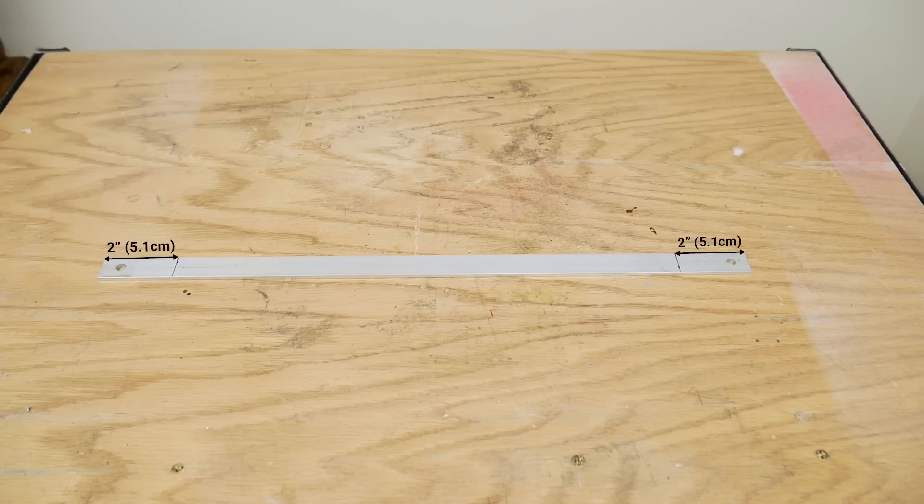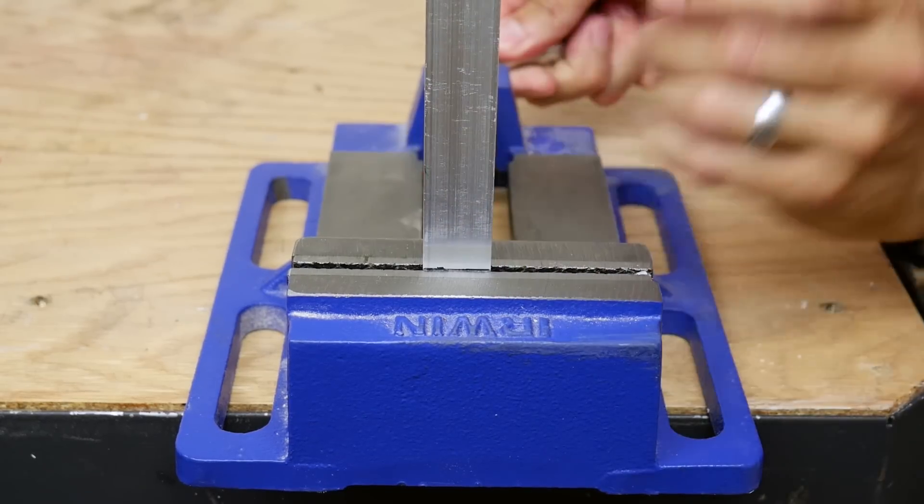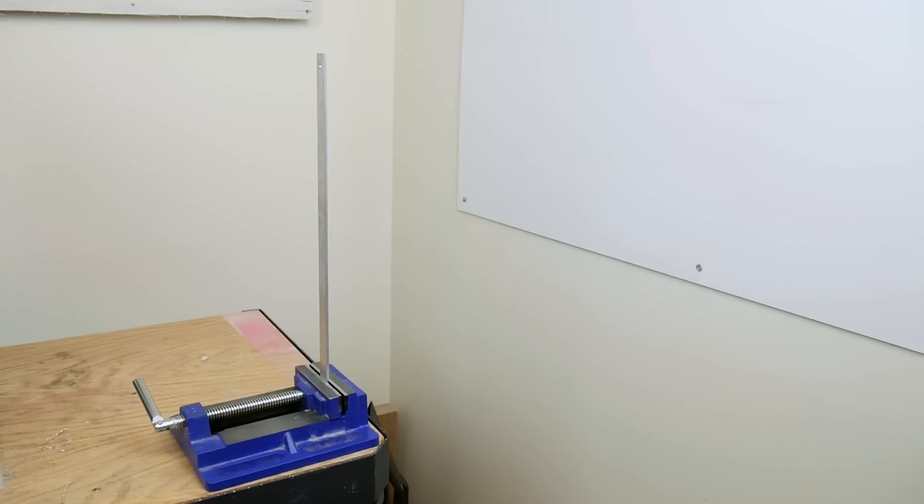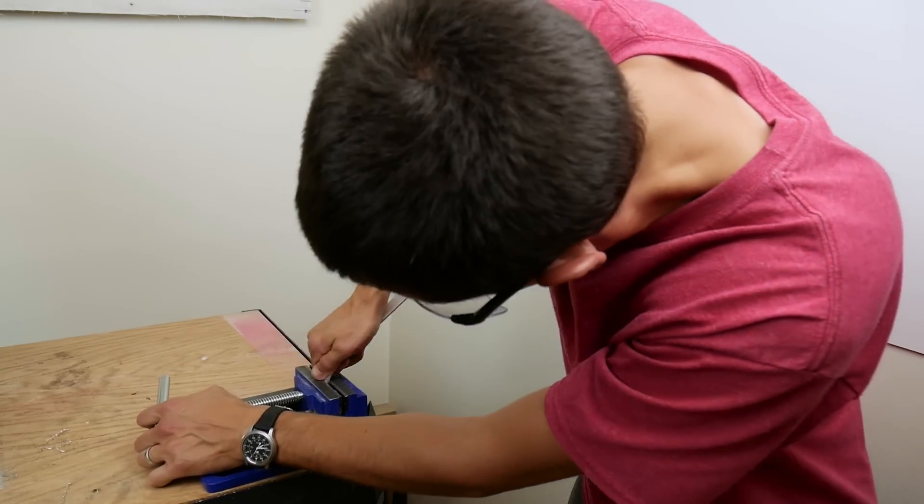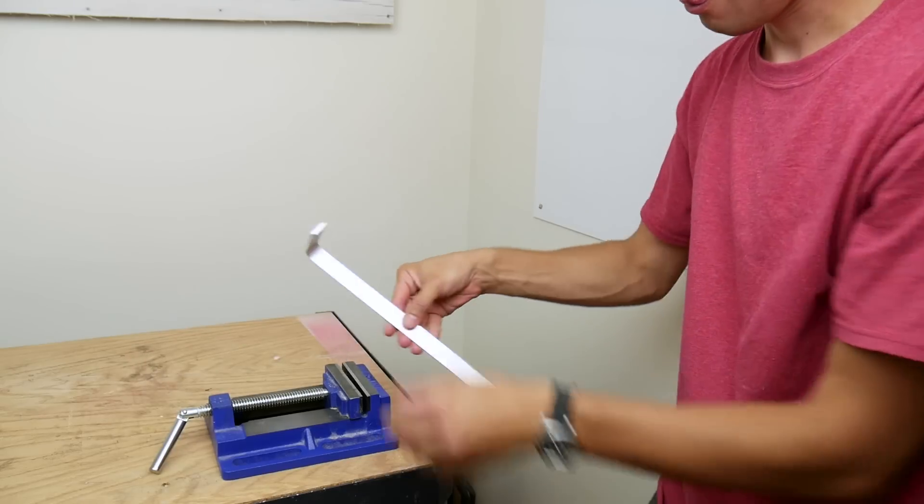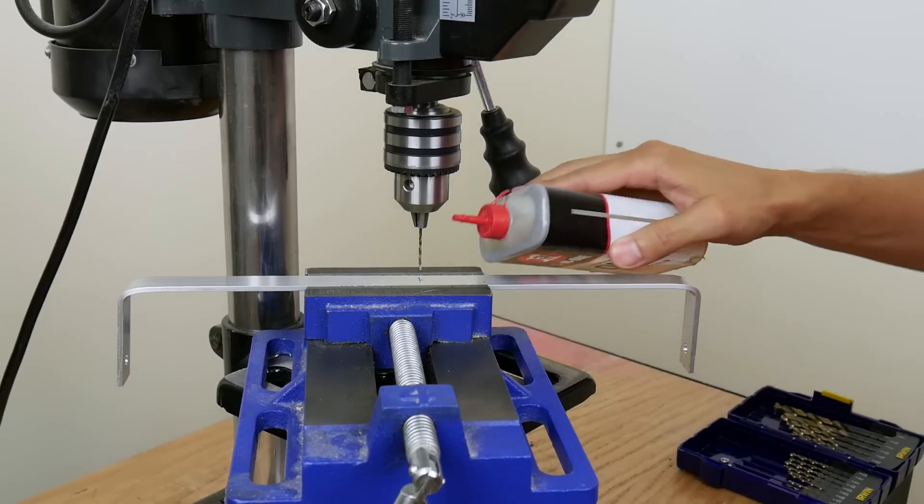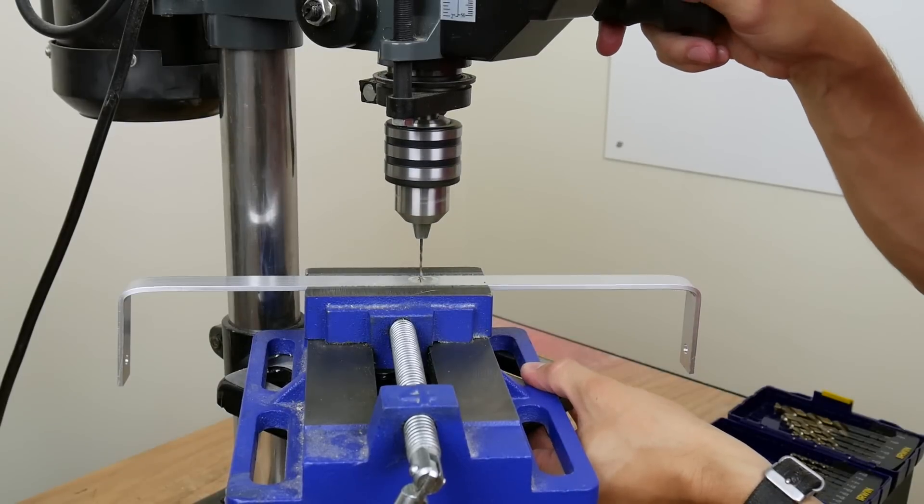I marked the bar at two inches from each end. I put the bar into a vise at these lines and bent each end to 90 degrees. This forms a U-shaped bracket. I marked the center of the bracket and drilled a 21/64 inch hole at this spot.